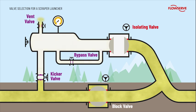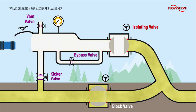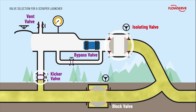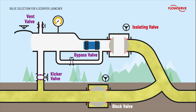When the chamber reaches ambient pressure, the door can be opened and the scraper is put into the launch position. In this phase, it is crucial that the isolating and kicker valves provide a bubble-tight shutoff to isolate the chamber and ensure operator safety, so the correct valve selection is critical.